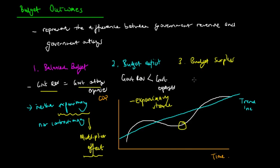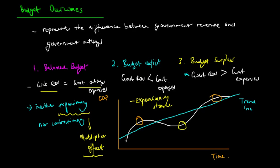Lastly, we have a government budget surplus, where government revenue is more than government expenses — the government is receiving more than what they're spending. In this case they're trying to slow down the economy, and this will typically occur in areas of a boom or expansionary phase on the business cycle. As the economy moves away from the trough towards a boom or a peak, we will see the government's budget outcome move from a deficit towards a surplus.